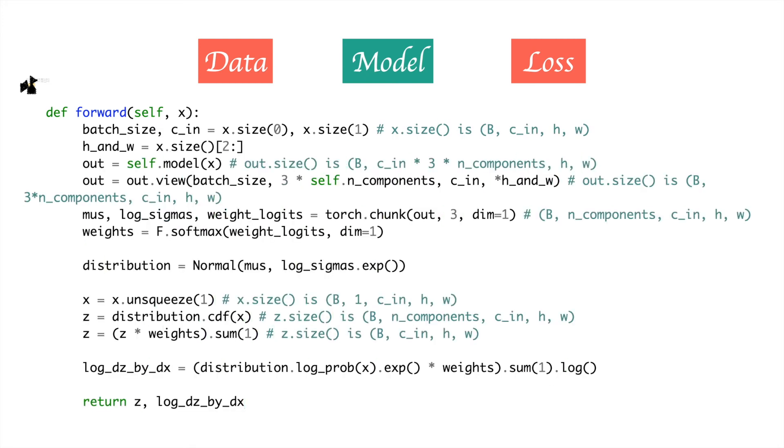Once we have that, we can simply calculate the transformation of each pixel value to its corresponding Z value by using the mus, sigmas, and weight logits which are an output of the stack of masked convolution layers that we just defined.